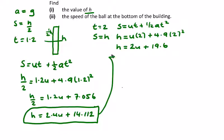So I'll just pick this one up, multiply it by minus 1. So we're going to get minus h equals minus 2.4u minus 14.112.